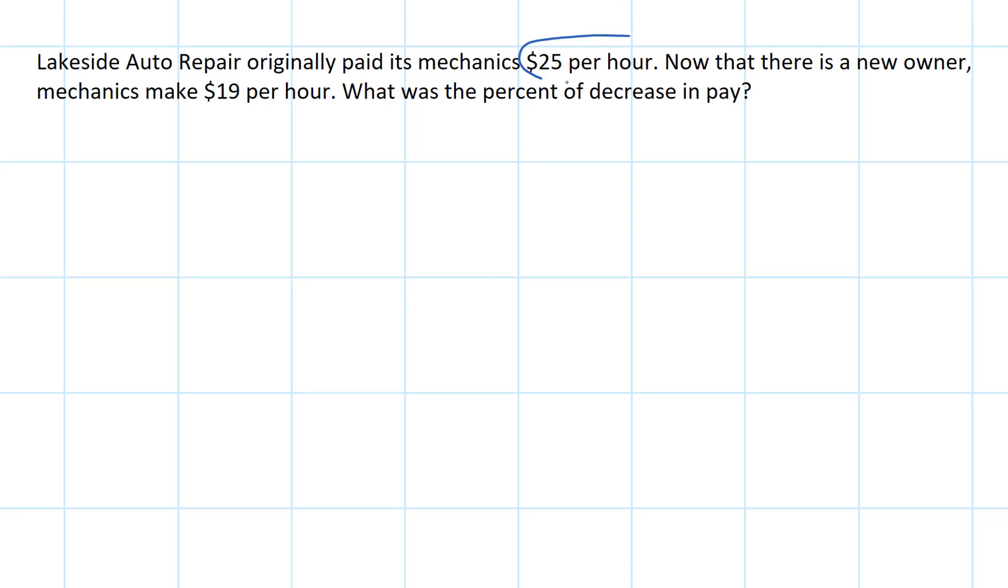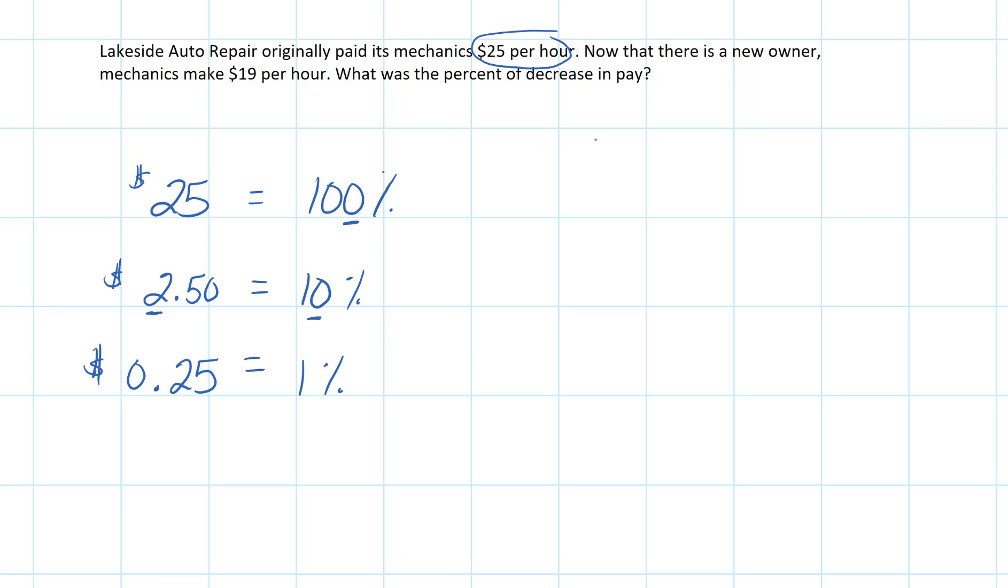We've got to start off with what they used to make as 100%. So $25 is equal to 100% of their pay. And in order to get 10%, we're going to shrink this number by a place value. So we get $2.50. And if we want to shrink it one more place value to get 1%, we end up with $0.25, which is 25 cents as far as money is concerned. Now, what I realize is that the decrease amount, if we take $25 and we subtract 19 from it, $6 is the decreased amount. And that's what we want to find.